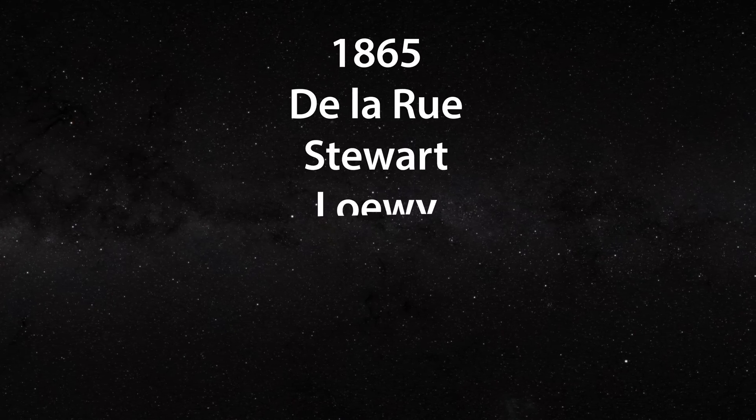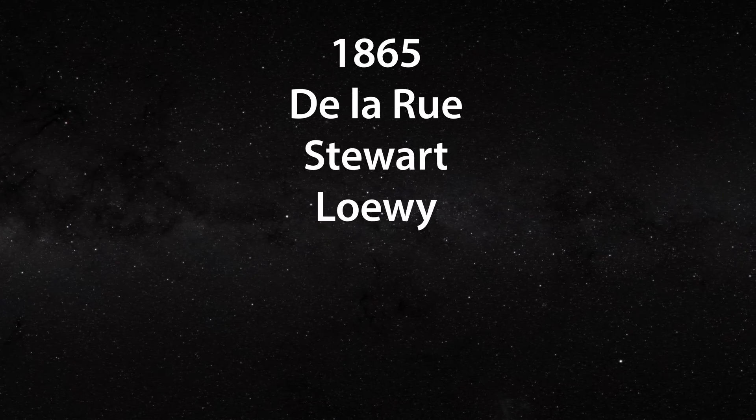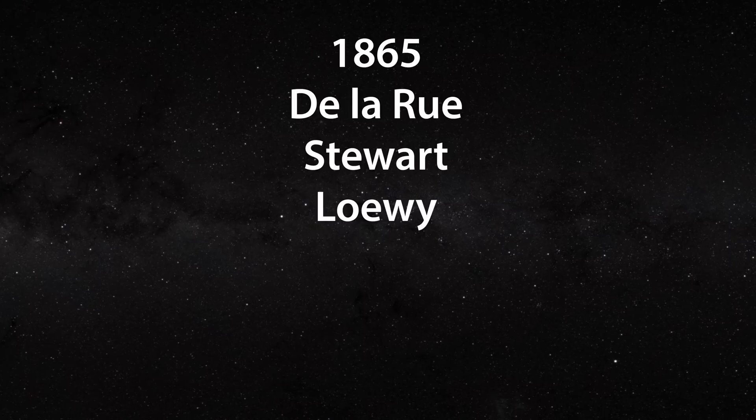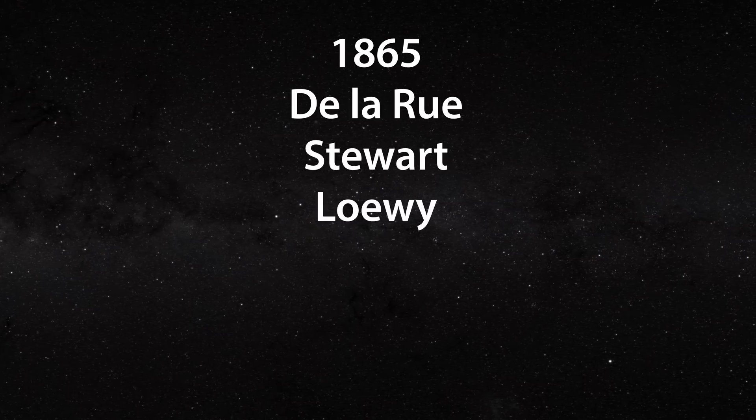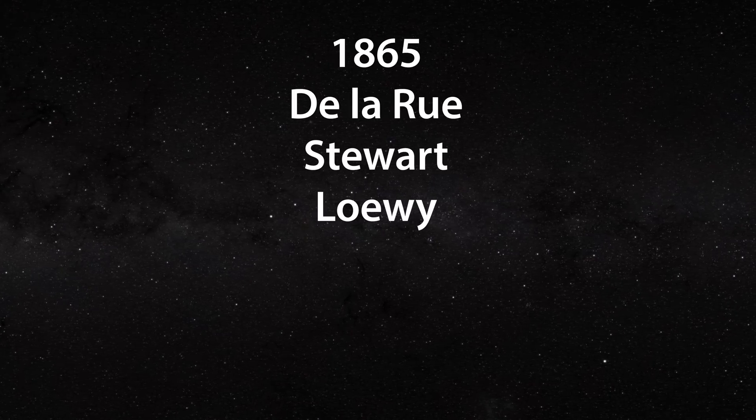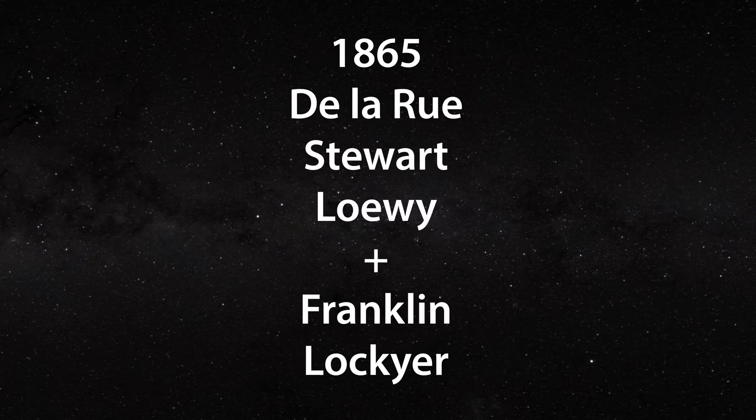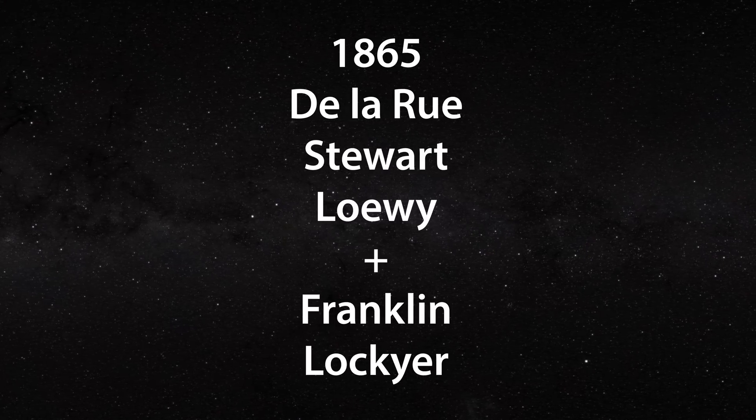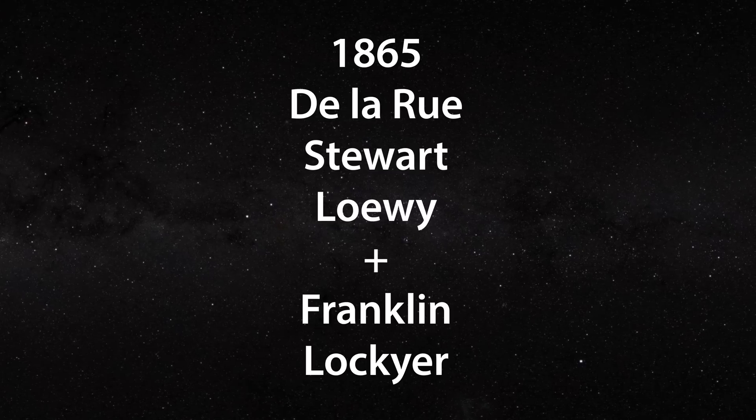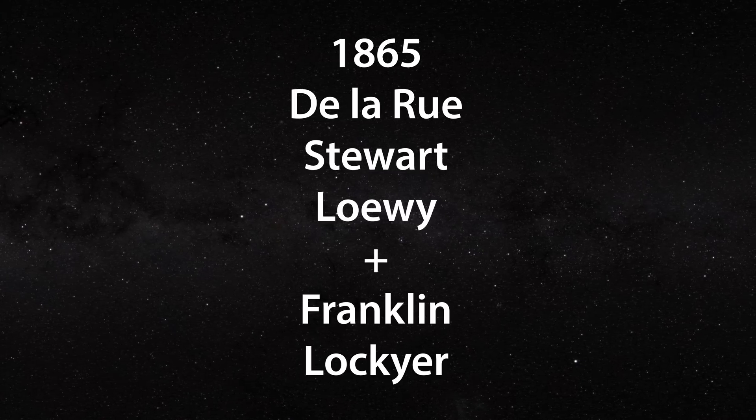One year later, in 1865, Delarue, Stewart and Lowry, without any experimental evidence, proposed that the continuous white light of the sun could be produced by a fully gaseous atmosphere. They were quickly endorsed by Franklin and Lockyer, the founder of the journal Nature. Thus, by 1865, the sun had become completely gaseous for many leading astronomers.